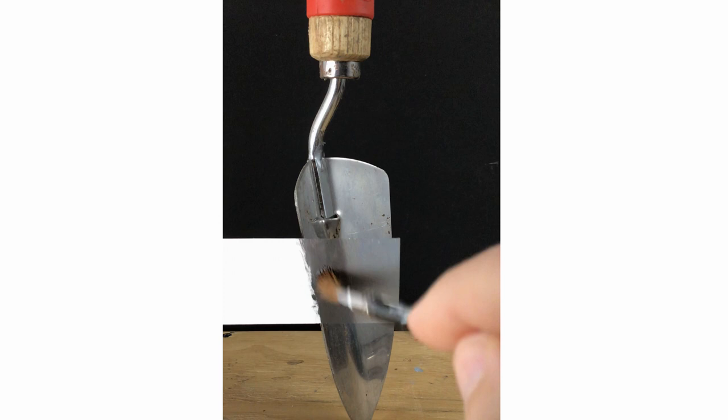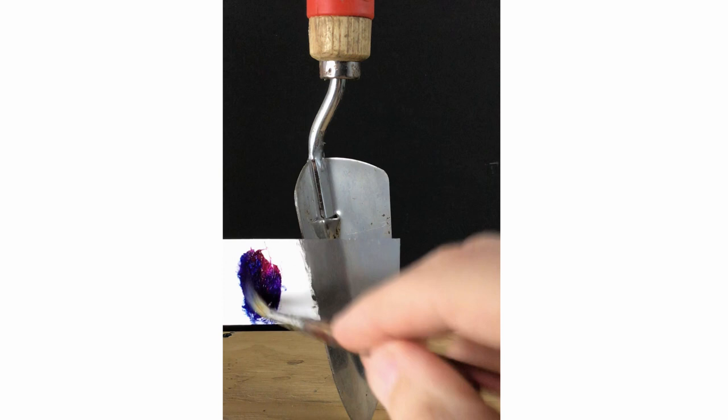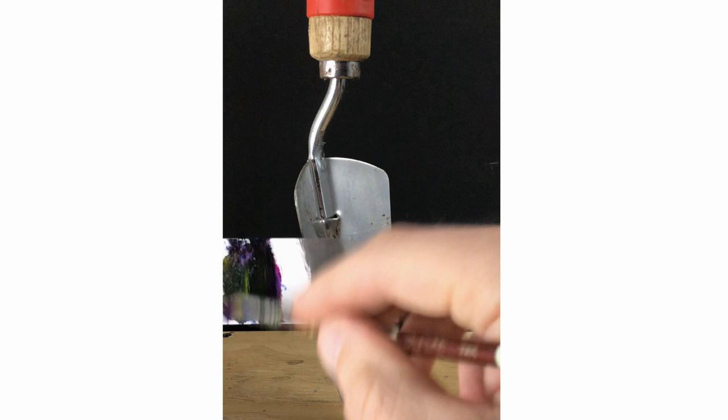So for the background, I'll just use phthalo blue, quinacridone magenta, and some yellow. I think it needs more yellow to neutralize it.